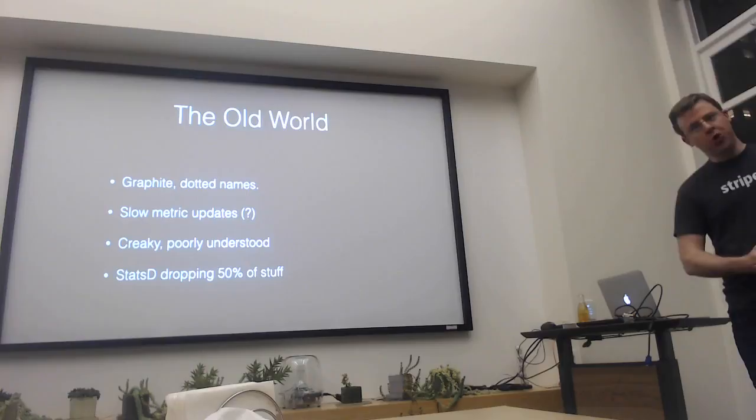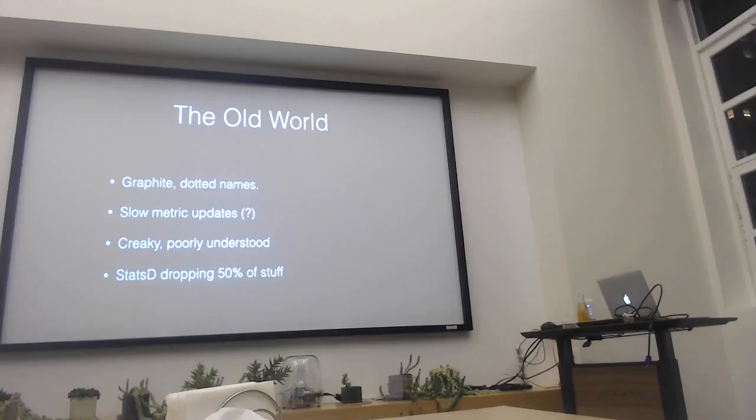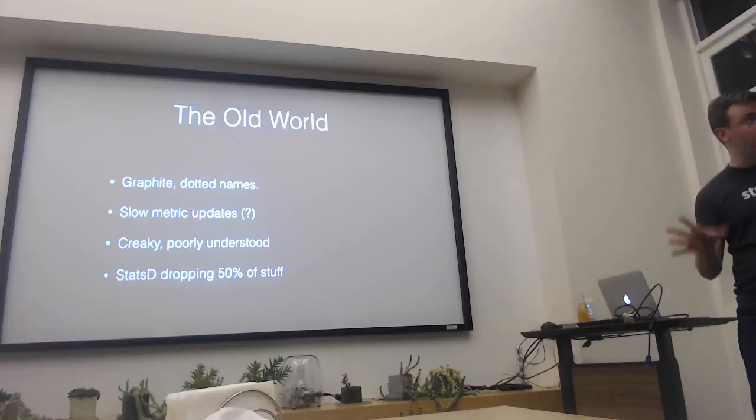We did not have ownership of the observability stack within Stripe. It was just whoever happened to be in the neighborhood that week, whoever lost the lottery to fix Graphite that particular week. And so there were a lot of problems — namely, a new metric: if you put something into production and you had a metric, it would take sometimes like 15 minutes for the metric to even show up for graphing purposes, which is very painful. All of the plumbing and how this stuff was strapped together was very creaky and very poorly understood.